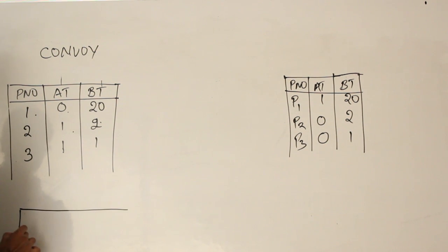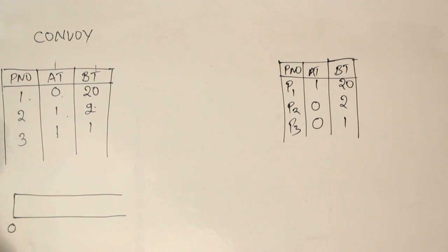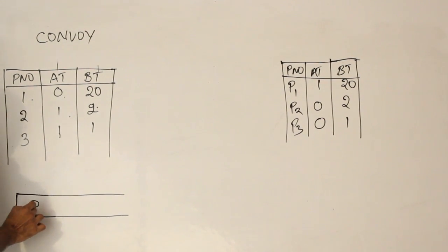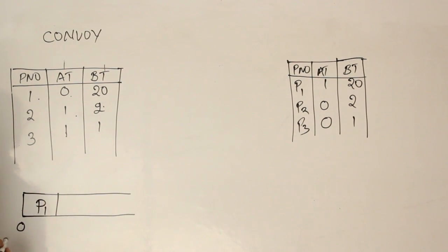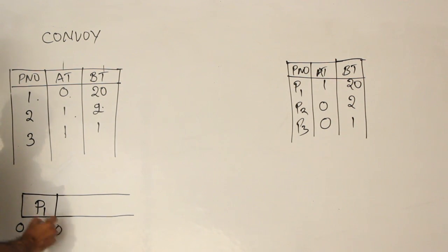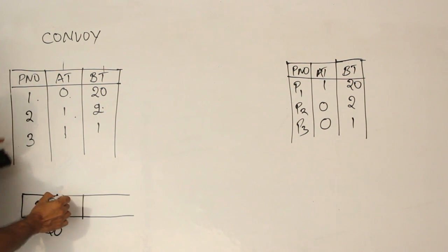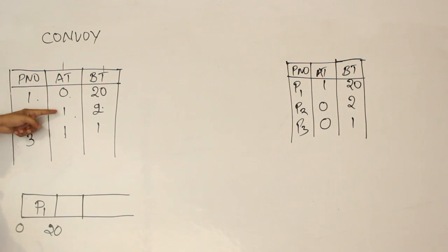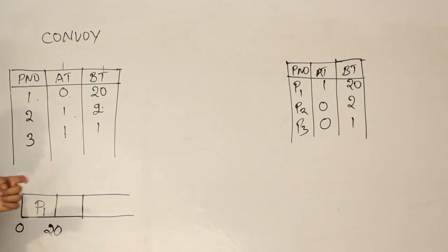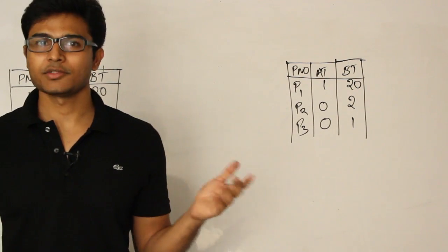I am assuming scheduling starts at time 0. The first process that arrived is P1 at time 0, so I schedule P1. Its burst time is 20, so it takes 20 units to finish. After that, P2 and P3 have the same arrival time, and the one with the lower process ID gets higher precedence.